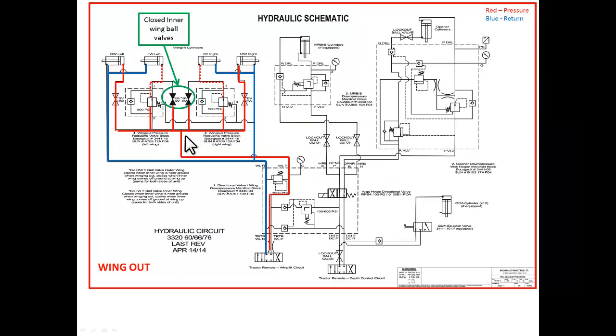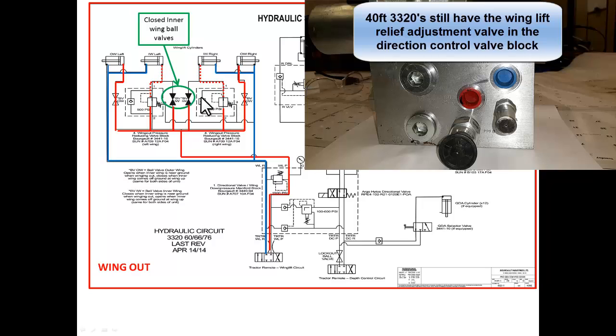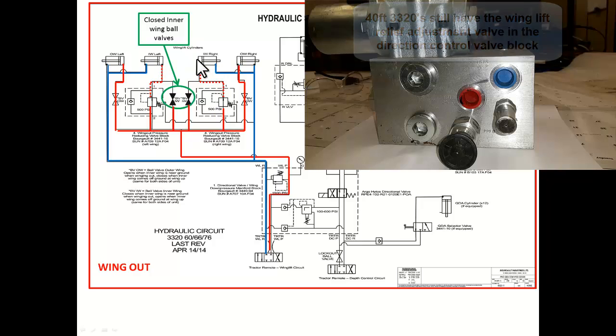Again showing the inner wing ball valve closed. Oil goes through a pressure reduction valve and is reduced pressure to the base end of the inner wing cylinders to prevent the cylinders from bending. This is also the reason why we can get away with no relief valve in the directional control valve, because the pressure reducing valve is the reduction in pressure to the base end of the inner wing cylinders.